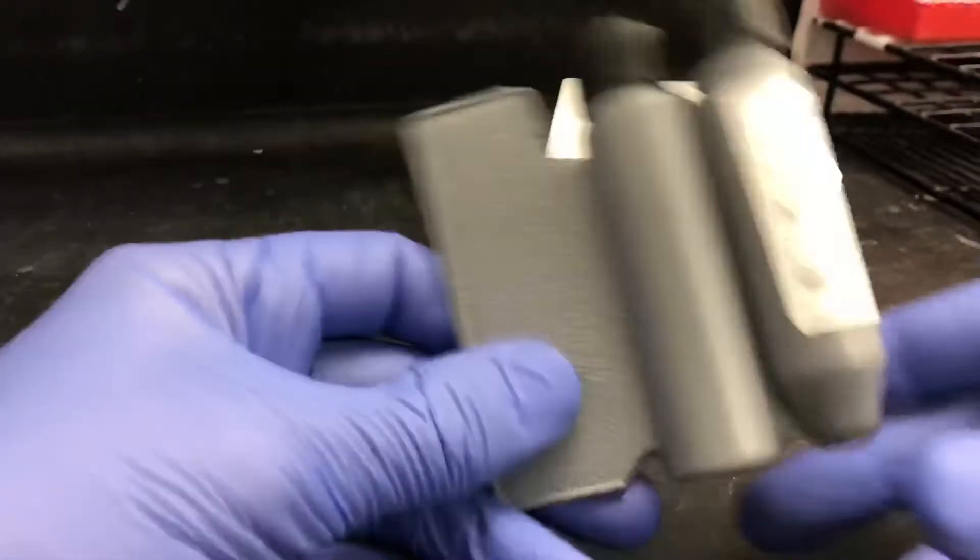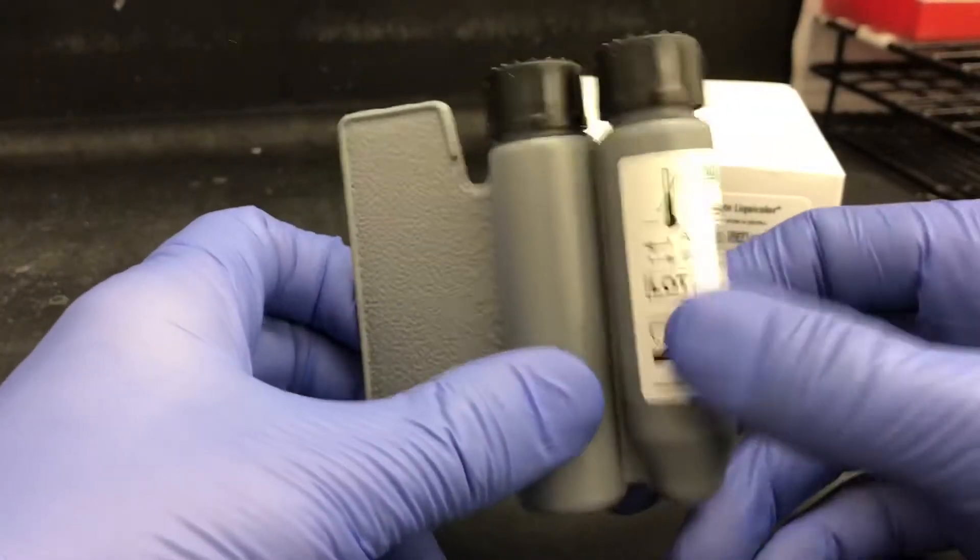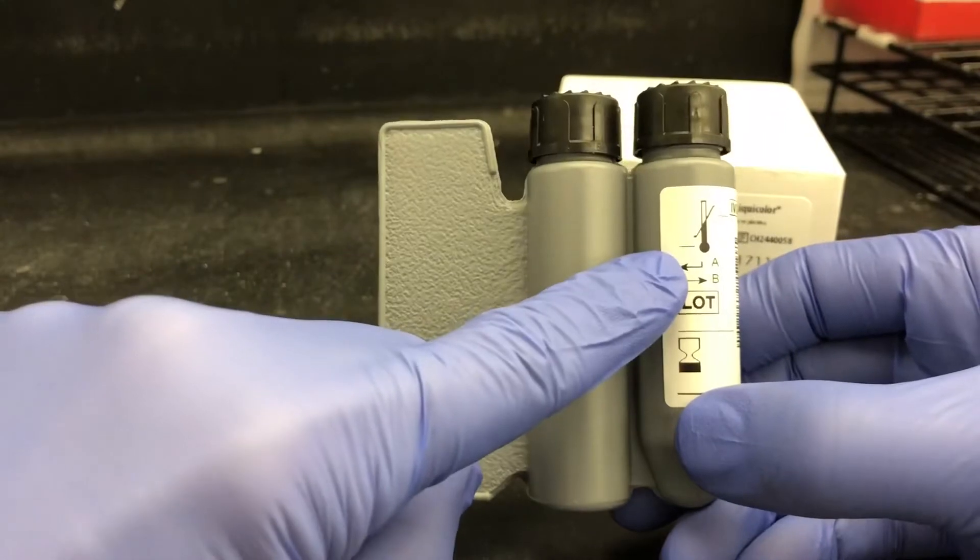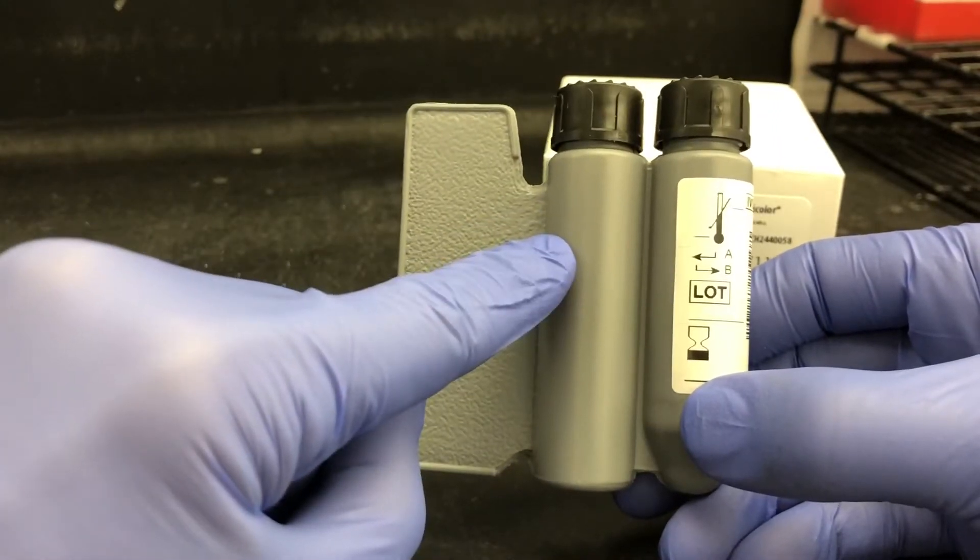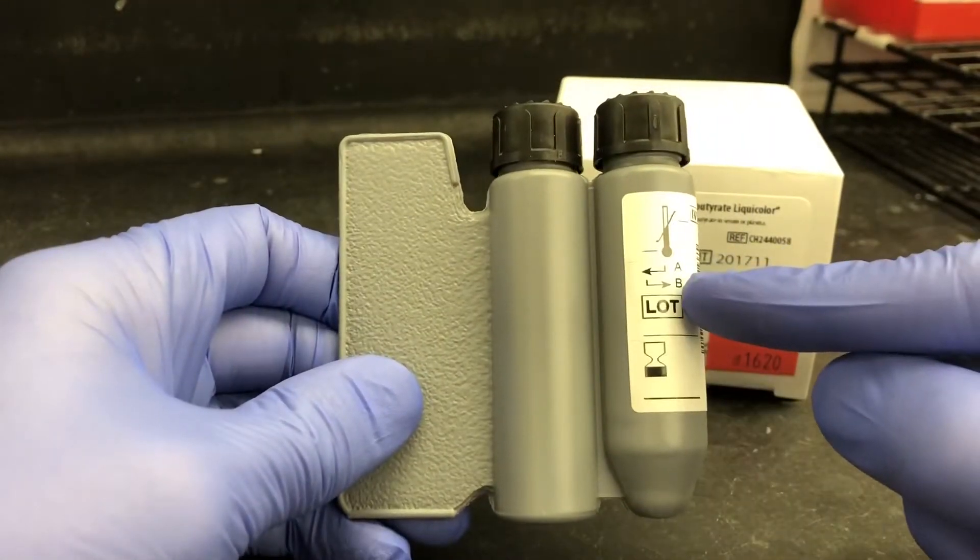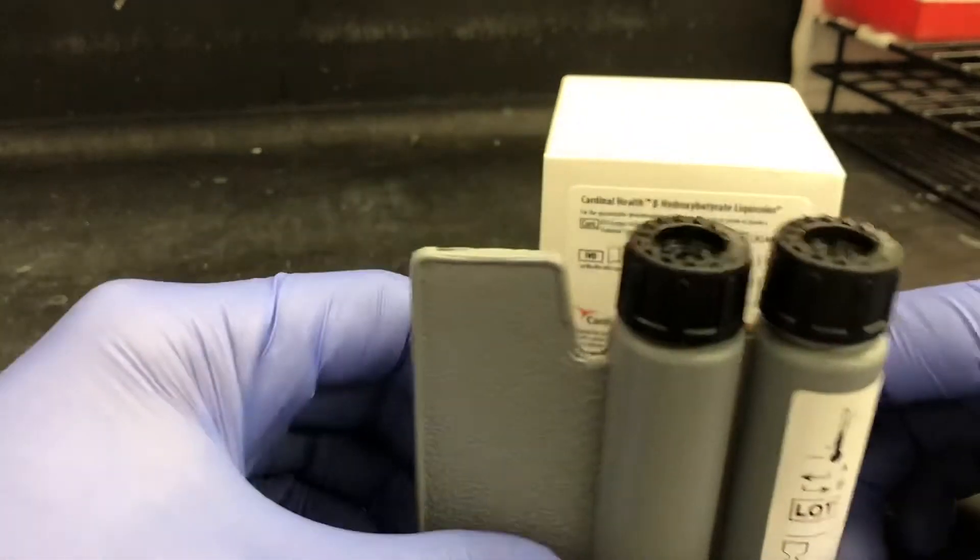This is what the user-defined reagent packs look like. They are marked A and B side, as you can see there, A side being for R1 reagents and the B side being for R2 reagents.